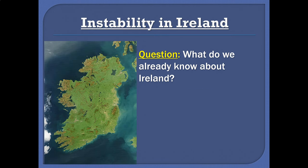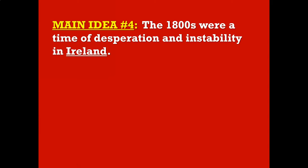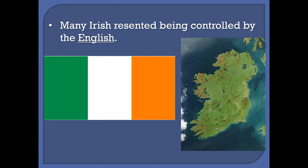Our last topic is next door to Britain — the island of Ireland, the Emerald Isle. Ireland at the time was entirely under the control of the British. They controlled Ireland as well as Great Britain. This led to problems, because a lot of Irish, out of feelings of nationalism, didn't want to be ruled by their next-door neighbor the English. They didn't like being lorded over in their own country. This had been going on for centuries — the British came in back in the 1600s and conquered much of Ireland.